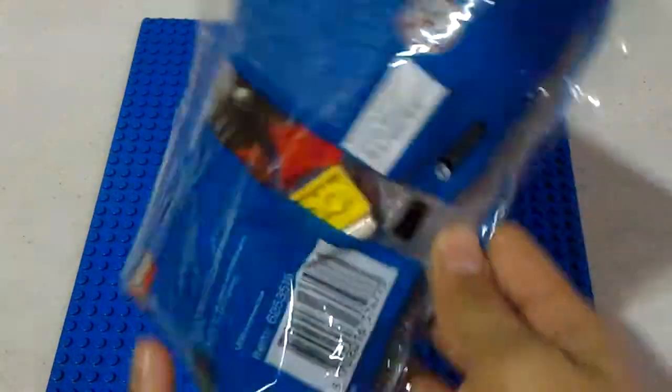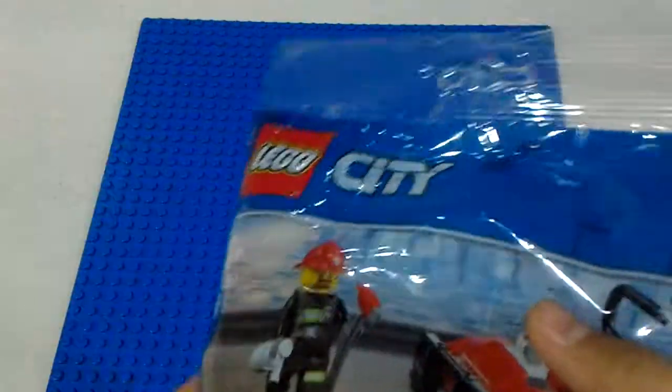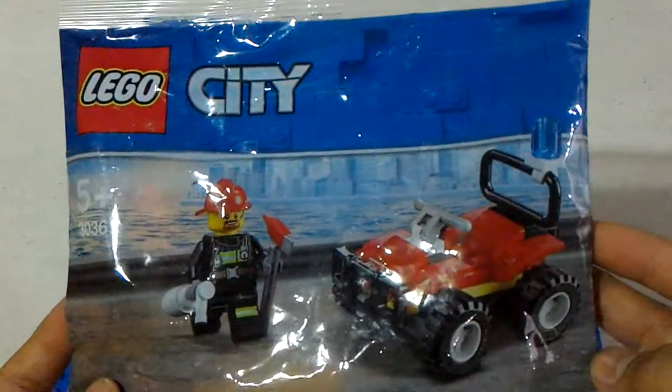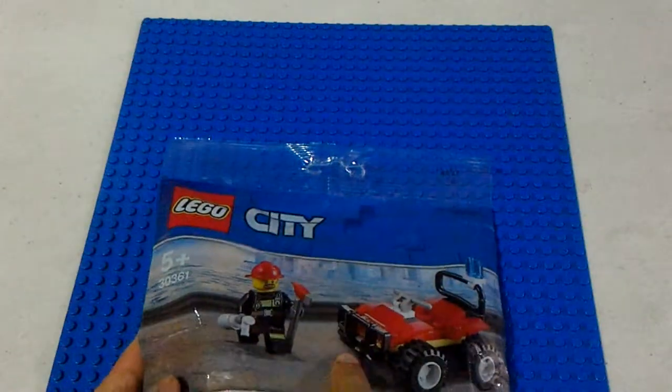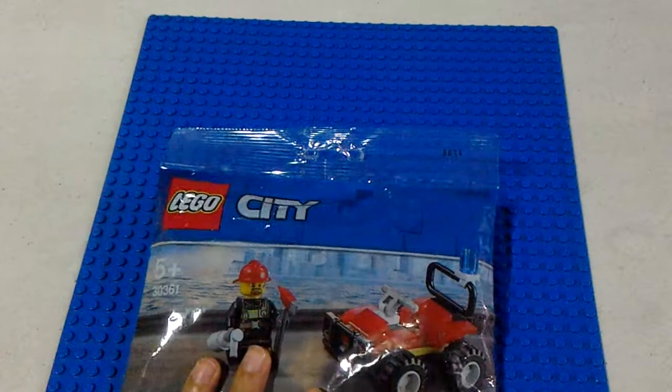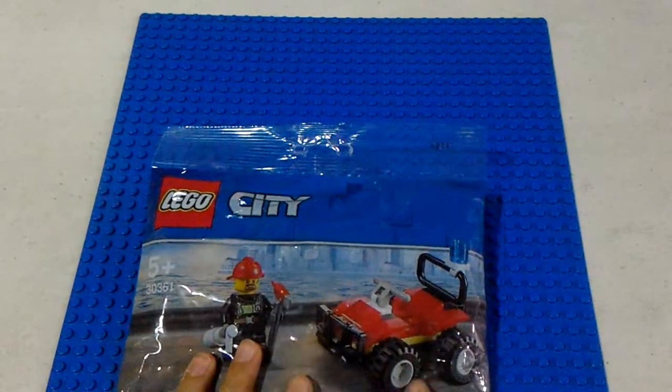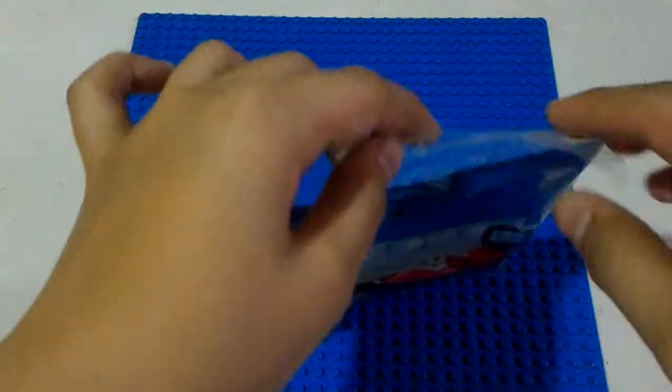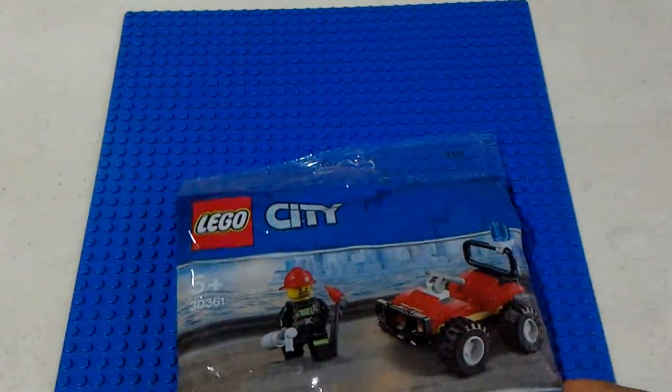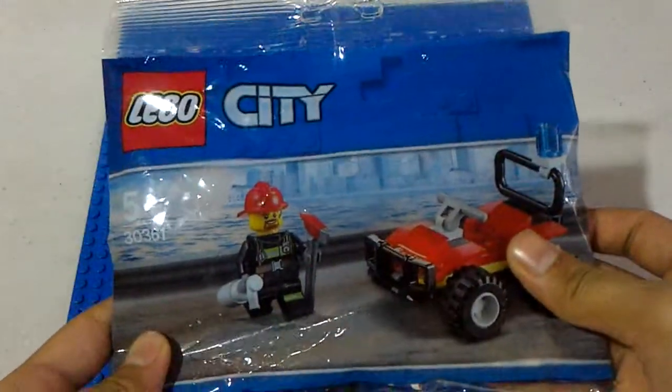It is a LEGO City Fire ATV with extremely rare parts like this axe here and some of its parts inside the ATV. Right now I will be building it and showing you what is inside.